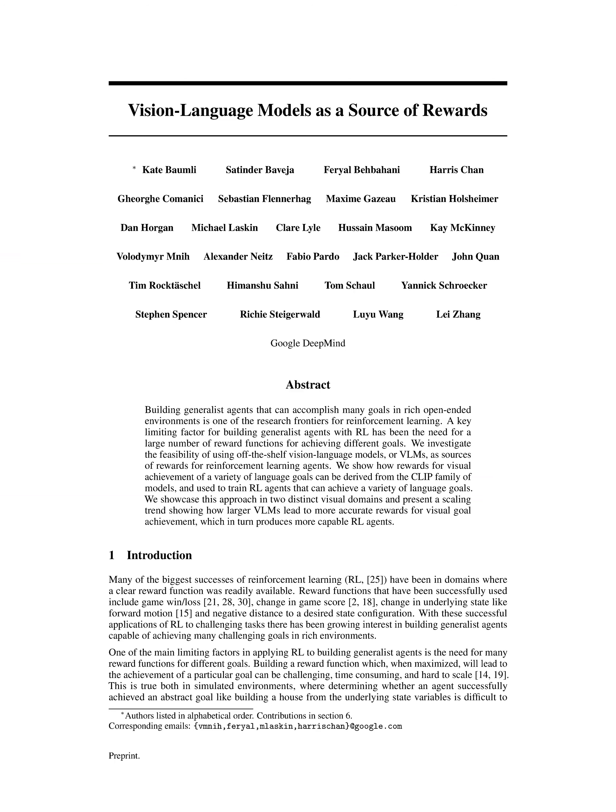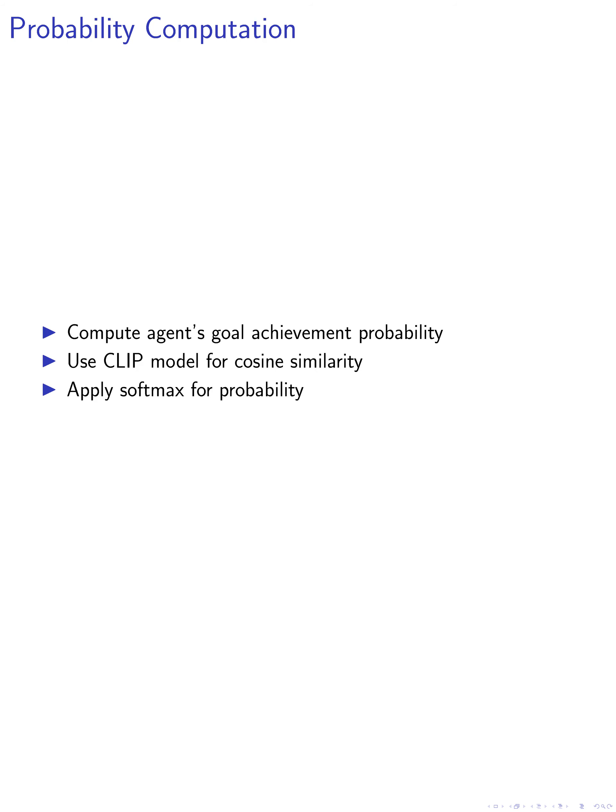In this paper, we first compute the probability that the agent achieves the goal given a language description and the current state. This is done by applying softmax over the cosine similarity between the state embedding and the language description embedding across a set of potential goals. We use the CLIP model to compute the cosine similarity between the embedding of the state and the embedding of the language description for each potential goal in the task set. We then apply softmax with a temperature parameter to obtain the probability that the agent achieves the goal given the language description and the state.